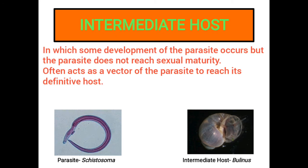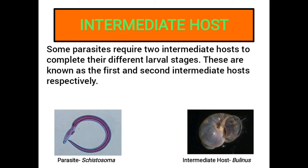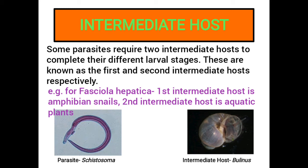Intermediate host: This is a host in which some development of the parasite occurs but the parasite does not reach sexual maturity. It often acts as a vector for the parasite to reach its definitive host. For example, human beings are the intermediate hosts for the malarial parasite Plasmodium, and snails of the genus Bulinus are the intermediate host for the parasite Schistosoma. Some parasites require two intermediate hosts to complete their different larval stages, known as the first and second intermediate hosts. For example, amphibian snails are the first intermediate hosts and aquatic plants are the second intermediate hosts for Fasciola hepatica.